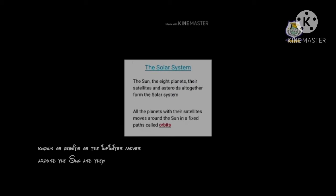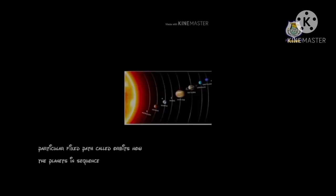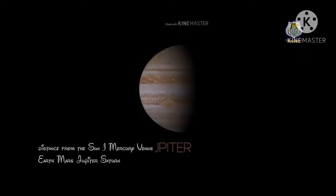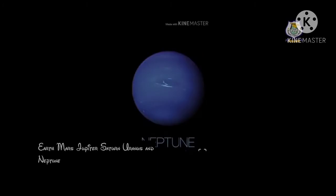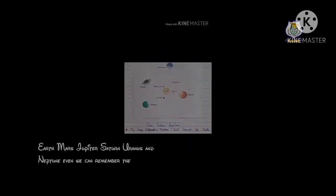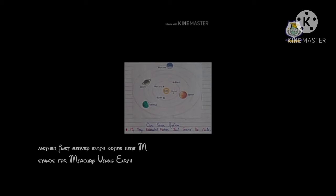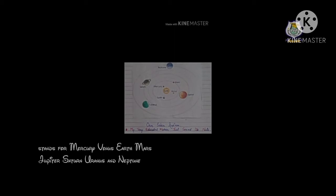The planets in sequence by their distance from the sun are: Mercury, Venus, Earth, Mars, Jupiter, Saturn, Uranus, and Neptune. We can remember the sequence of the planets by the following sentence: 'My Very Educated Mother Just Served Us Nachos,' where M stands for Mercury, V for Venus, E for Earth, M for Mars, J for Jupiter, S for Saturn, U for Uranus, and N for Neptune.